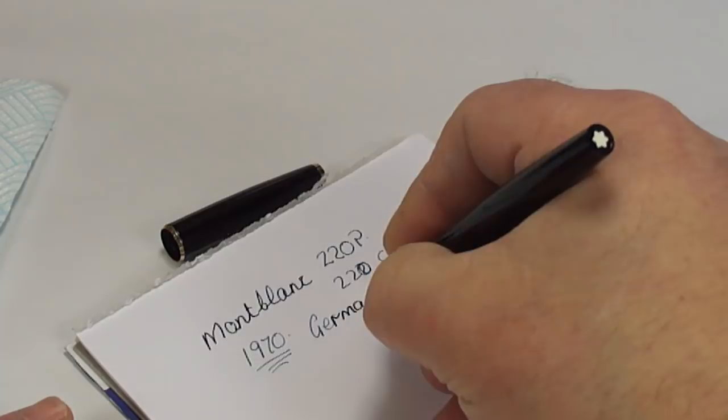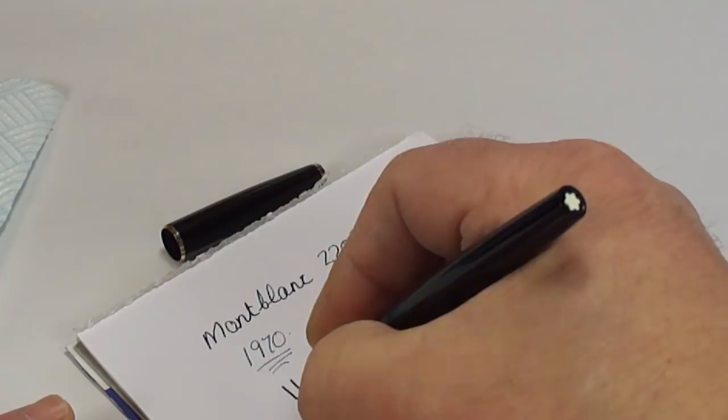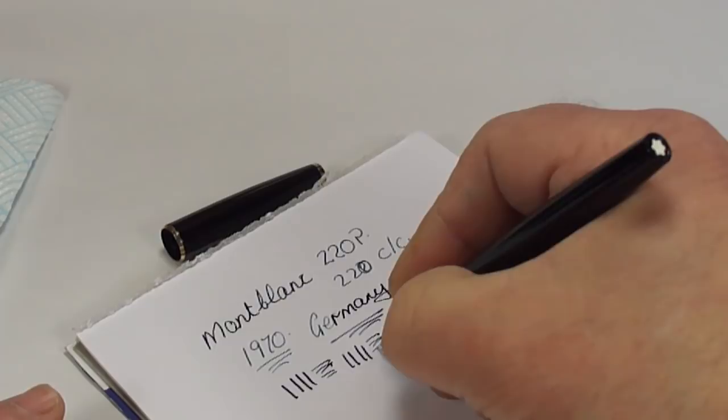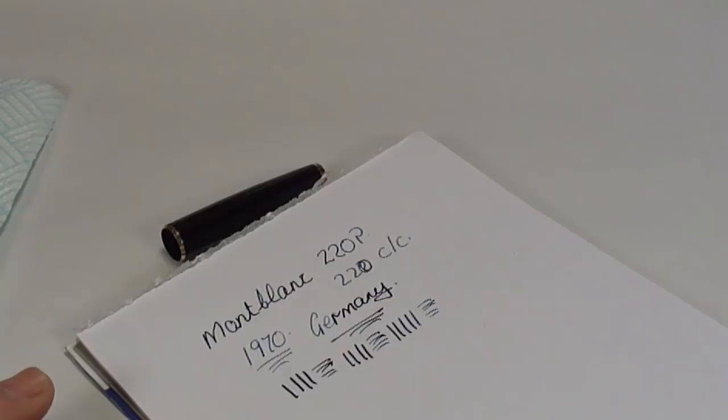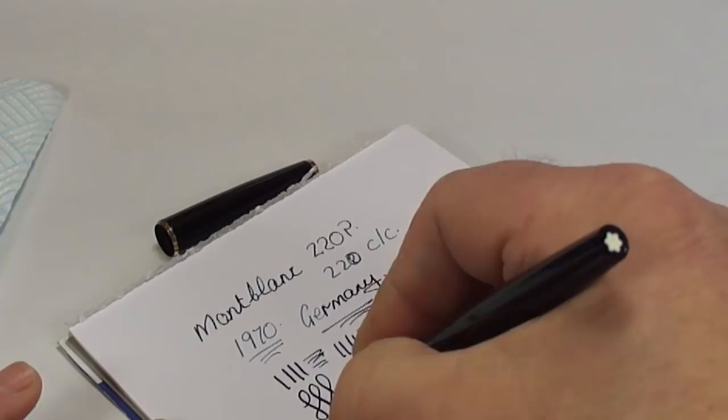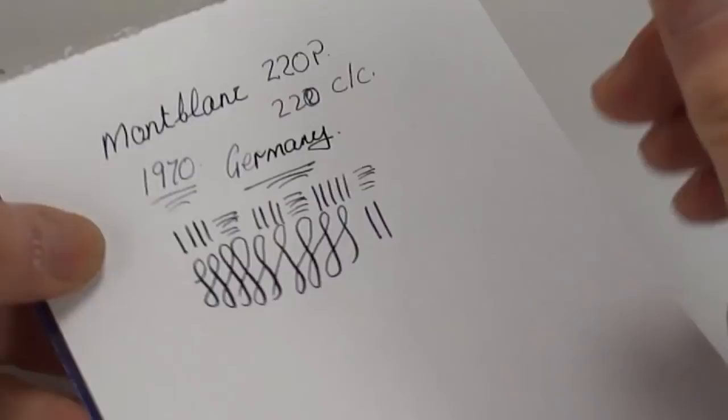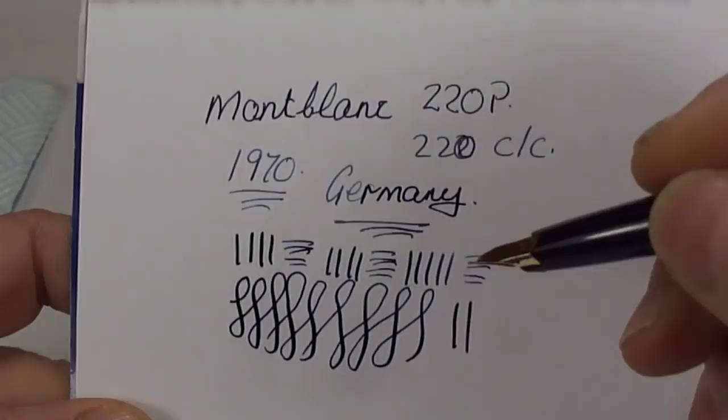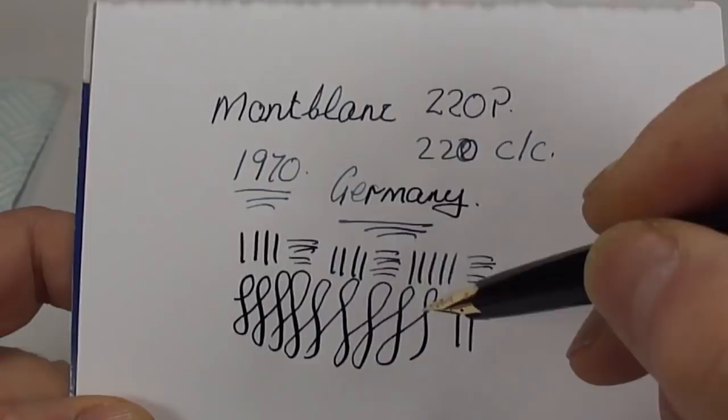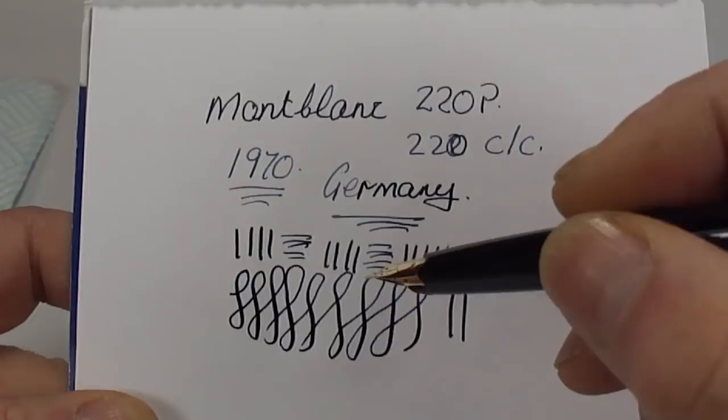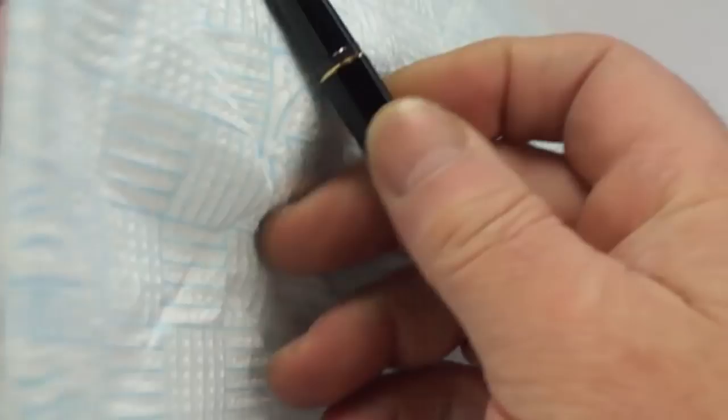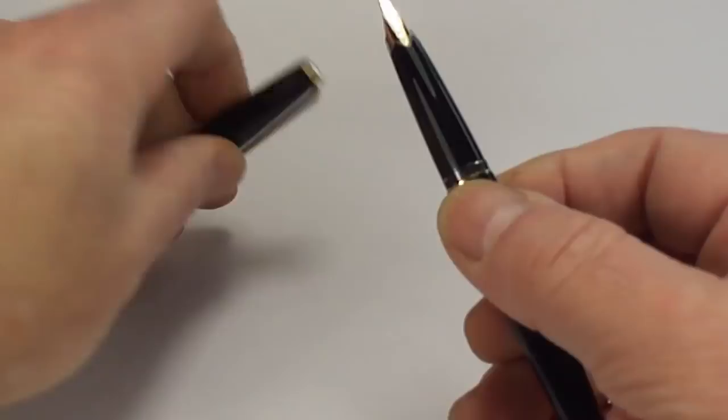Does it have a flex nib? Slightly, I would say. We're just getting a slight broader line on the downward stroke. Not a great deal. Let's dip it again. Let's do some figures of eights. Depending on the pressure that you put on the pen, but, I would say it's got a slight flex nib as well. You can see on the downward stroke, we can get a slightly broader line than on the cross stroke. So, a lovely writer and, well, the fact that we've cleaned all the gunk from inside, the nib, the feed, the section, hopefully we've resolved the ink flow problem.